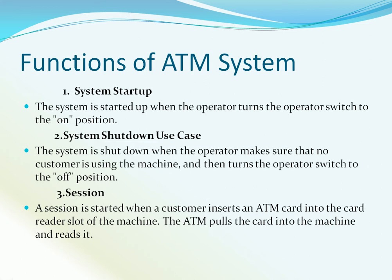The first function is the system startup function. The system startup function is used when the operator turns the operation switch to the on position. The system shutdown function is used when the operator makes sure no customer is using the machine and then turns the operator switch to the off position. A session is started when a customer inserts an ATM card into the card reader slot of the machine, and the ATM pulls the card in and reads it.